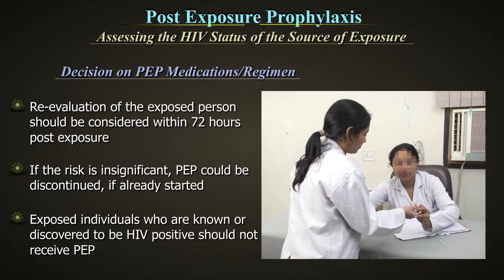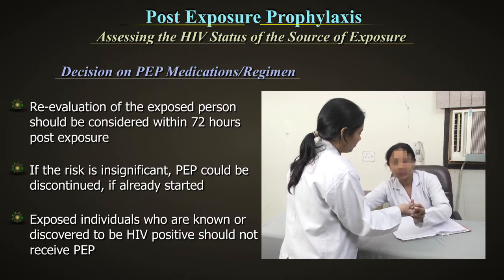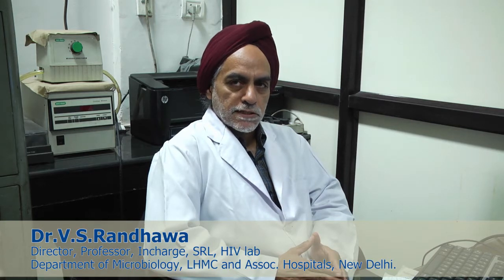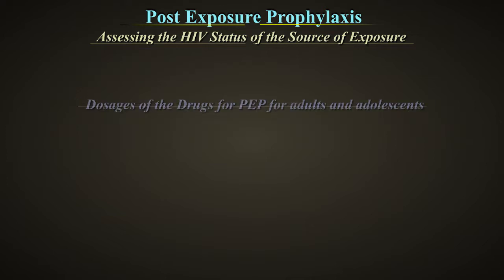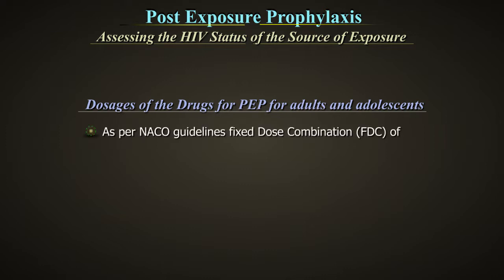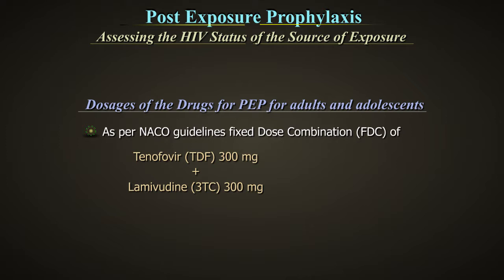Exposed individuals who are known or discovered to be HIV positive should not receive PEP. Any suspected HIV exposure through needle stick should be addressed with PEP within 72 hours or 3 days. The decision to start a PEP regimen depends on the type of exposure and the HIV status of the source. Dosage for adults and adolescents: fixed dose combination of tenofovir TDF 300 mg plus lamivudine 3TC 300 mg plus efavirenz EFV 600 mg once daily for 4 weeks.